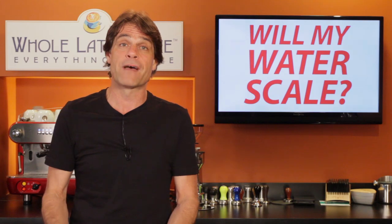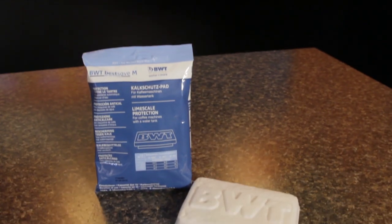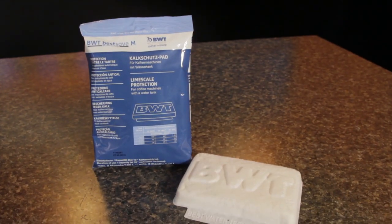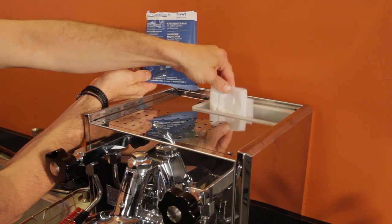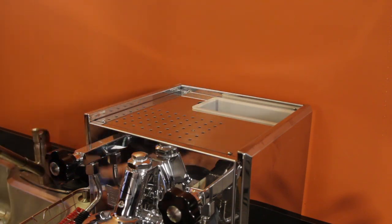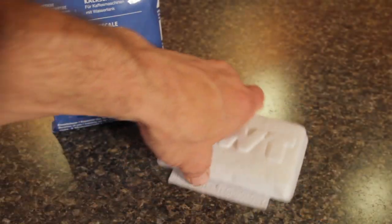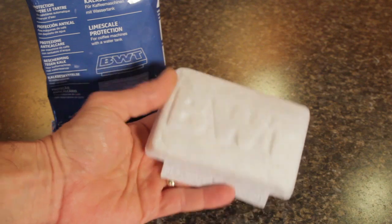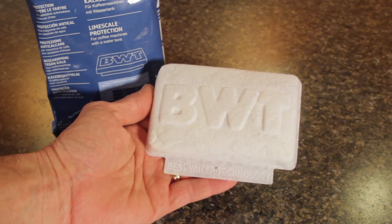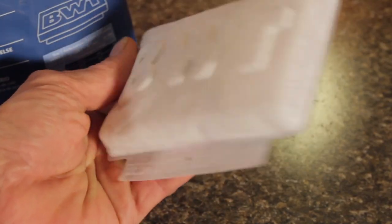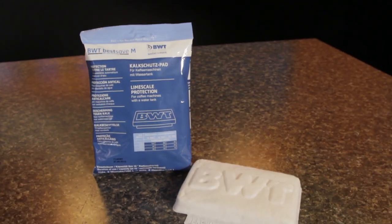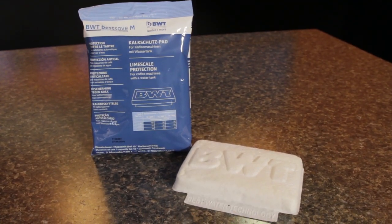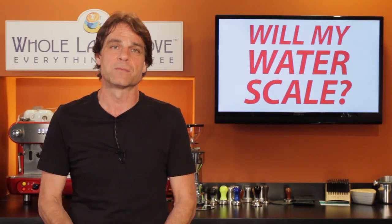For a reservoir-fed machine, I'd use the BWT BestSave-M anti-scale filter. Very easy to use — just drop it in your machine's reservoir and you are good to go for about two months. It takes care of chlorine with carbon and has that same patented calcium-magnesium ion exchange technology used in their inline premium filter. If you'd like to learn more about the BWT filter systems, use the link up here.